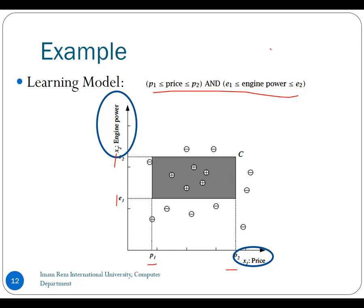If this condition is true, it means that the car is inside the rectangle defined by p1, p2, e1, e2. If this condition is true we have a family car — the inside shows a plus sign. And if this condition is not true we have a non-family car.